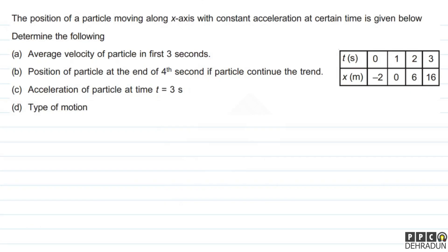Welcome students, let's have a look at this beautiful problem on kinematics. The question says: the position of a particle moving along the x-axis with constant acceleration at certain times is given below. Determine the following: average velocity of the particle in the first three seconds, position of the particle at the end of the fourth second if the particle continues the trend, acceleration of the particle at time t equal to three seconds, and type of motion.